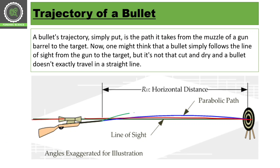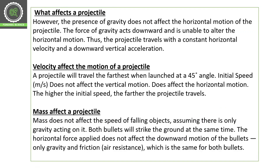The bullet travels in a parabolic curve, so we call this the trajectory of the bullet. This distance from the muzzle where the bullet goes is called the horizontal distance. The line of sight means we see where the target is when firing. So this is the trajectory of the bullet.